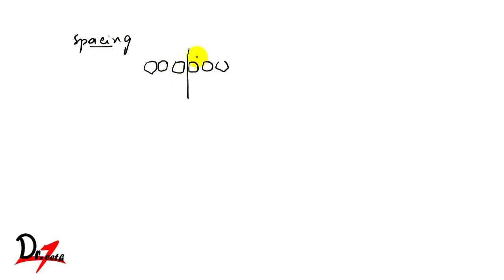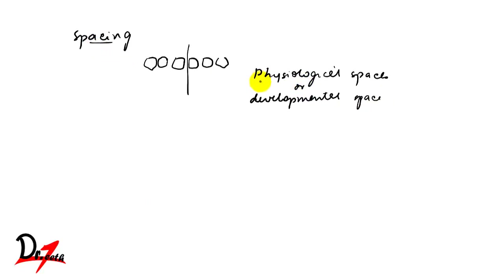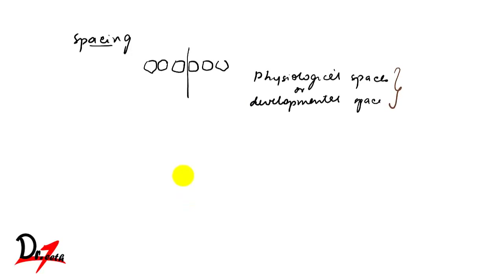In our deciduous dentition we have spacing between the teeth. If you look at the teeth of a child of this age, you'll find spacing between them. This spacing is present between all teeth and is called physiological spaces or developmental spaces. This physiological space is important because it helps in the normal development of the permanent dentition — permanent teeth are larger in size and need space to erupt.